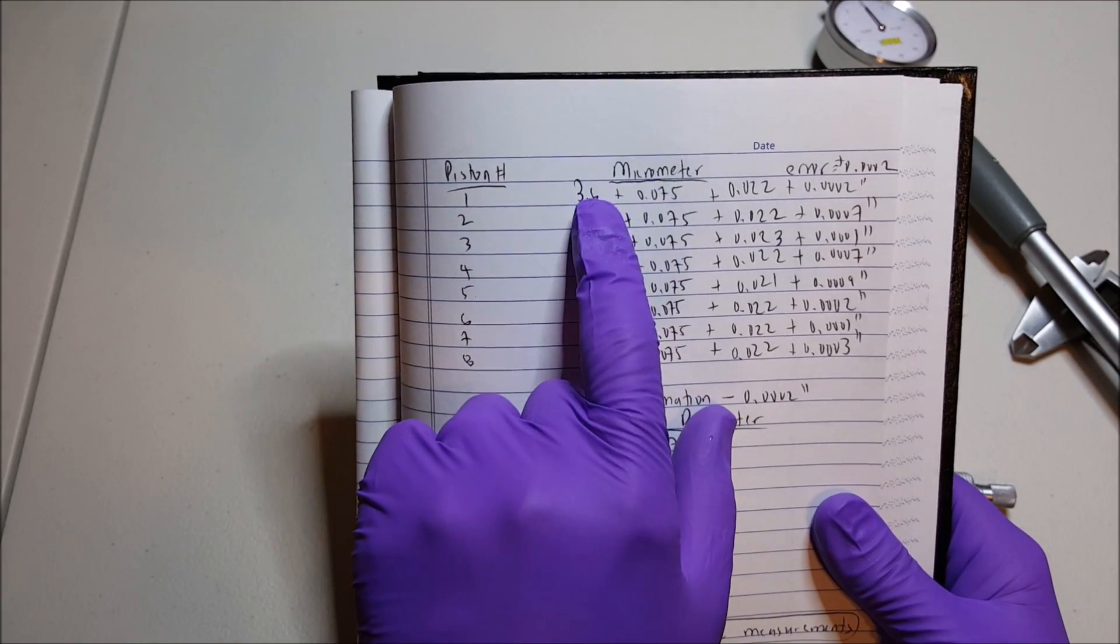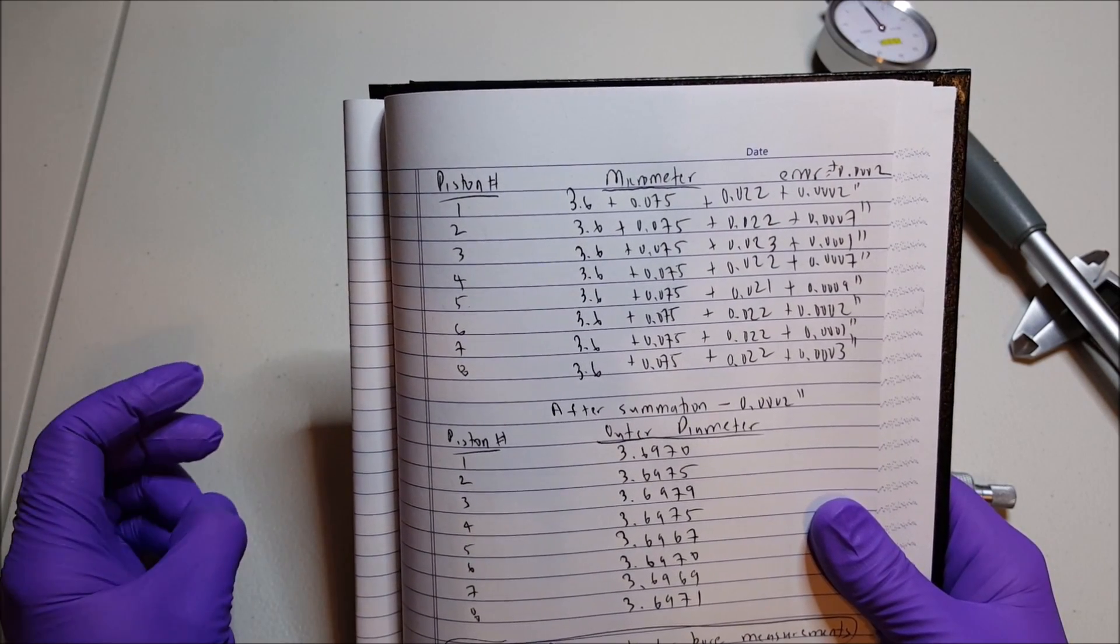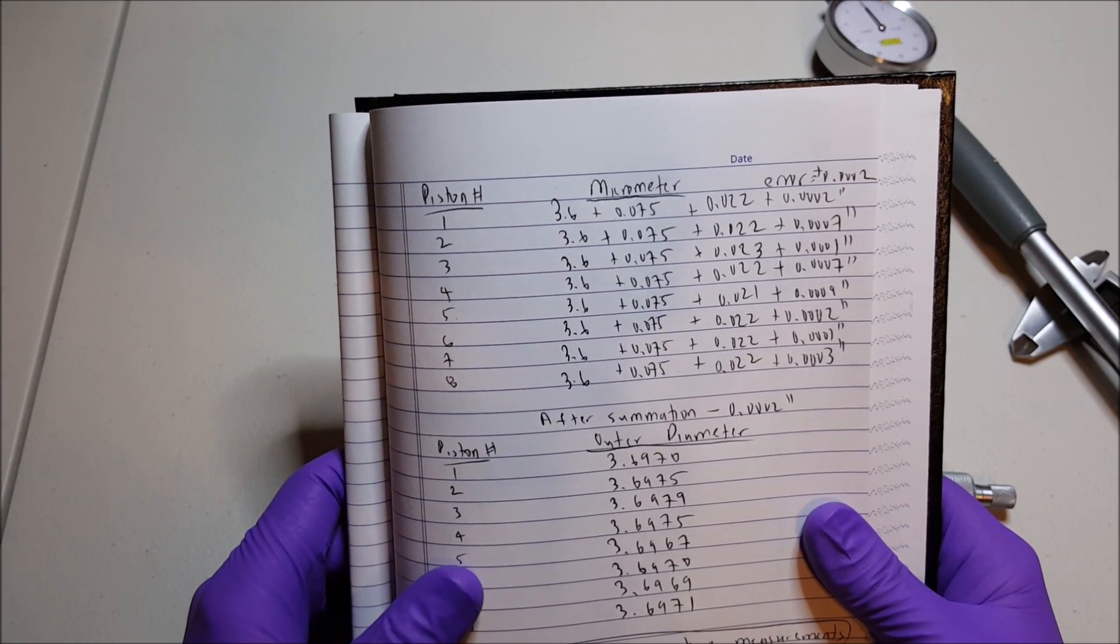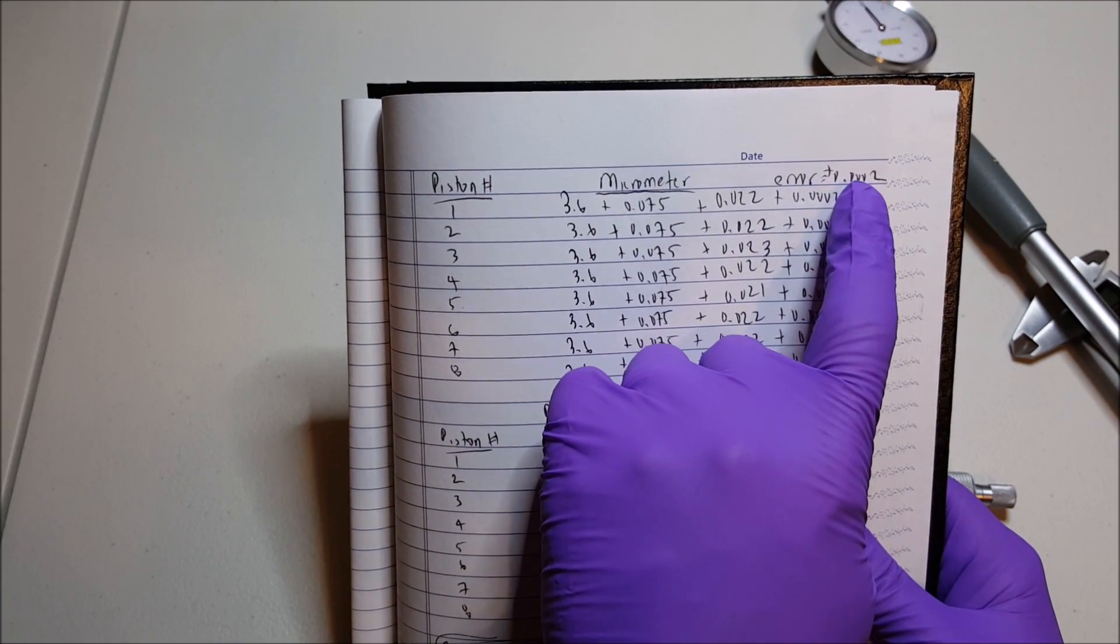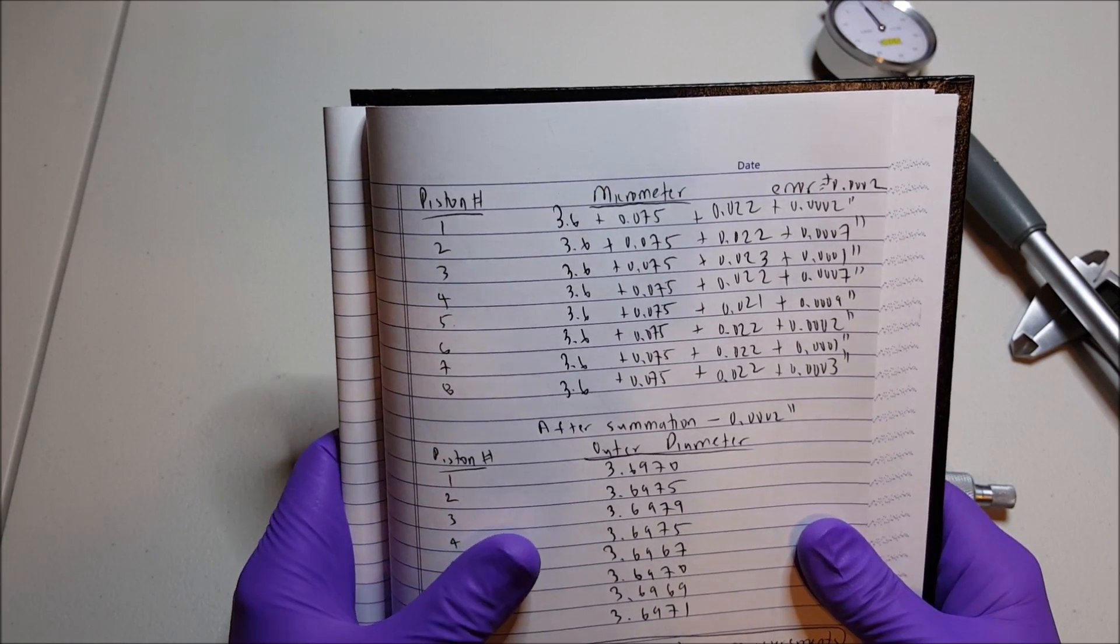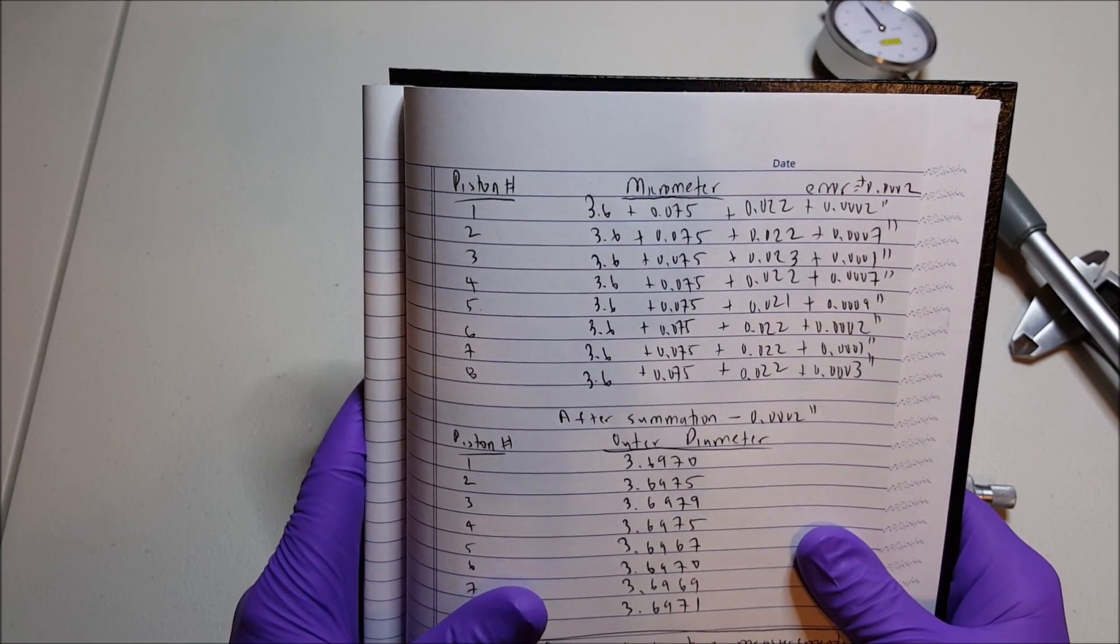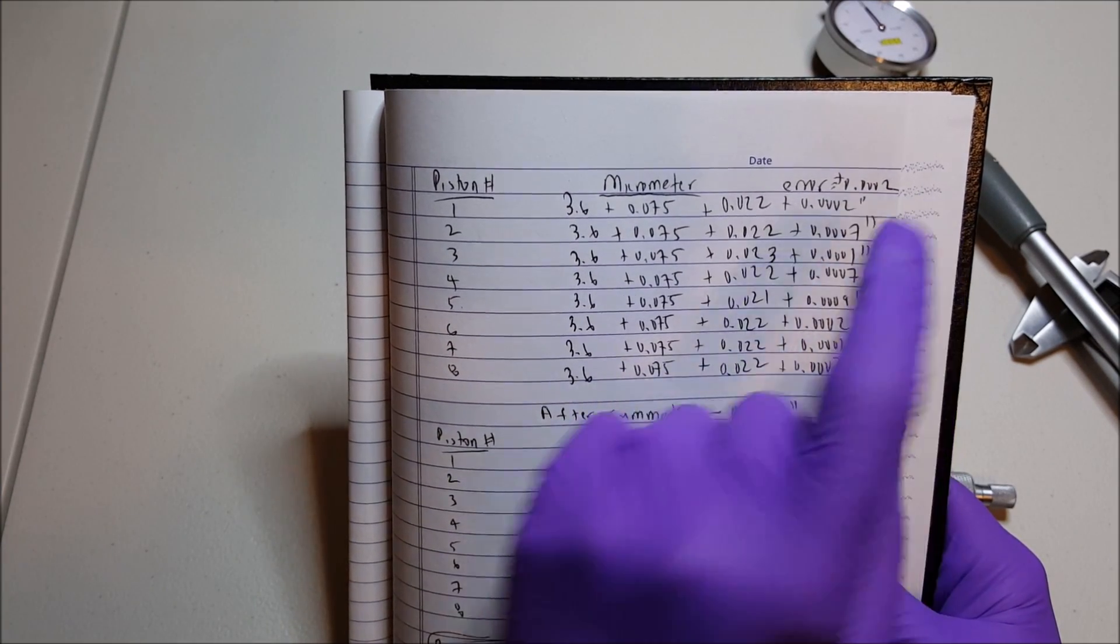What you're seeing here is the different measurements on the micrometer. Essentially, the micrometer measurement is determined from a summation of various increments, which you'll read off of your micrometer. If you notice here, error is plus 0.0002 inches. When you get your micrometer, it should come with a gauge. In this case, I actually had to order a 3 to 4 inch micrometer. That comes with a 3 inch gauge, which you can check your micrometer with. The error was reading actually high of 2 ten thousandths of an inch.